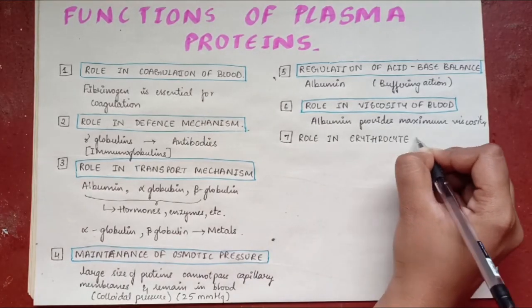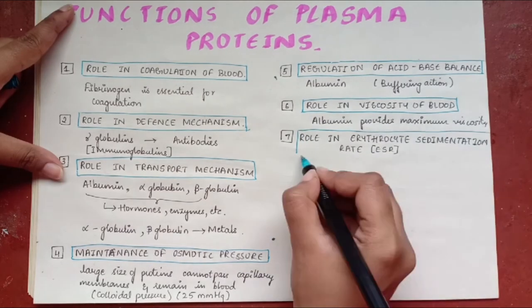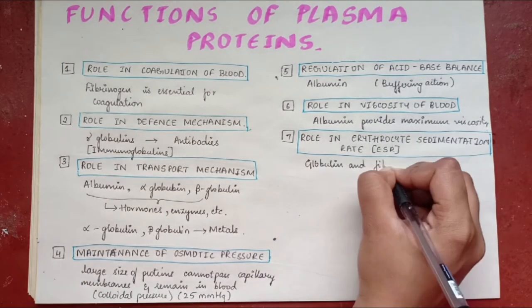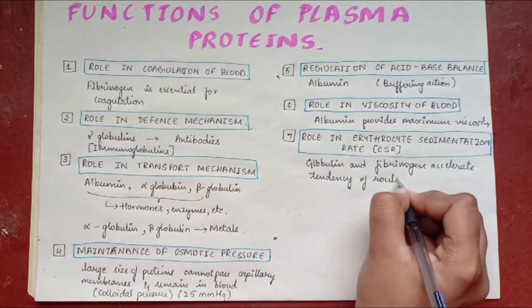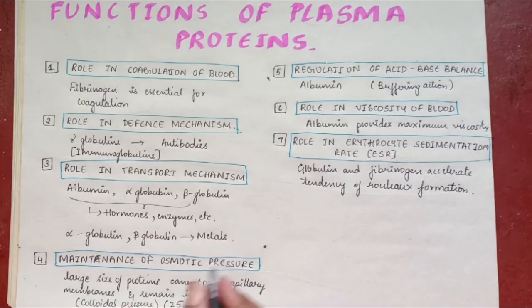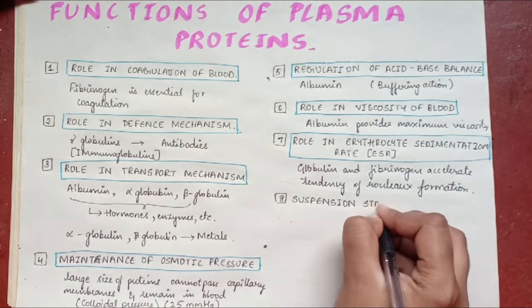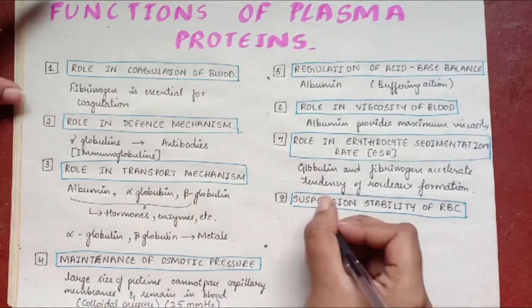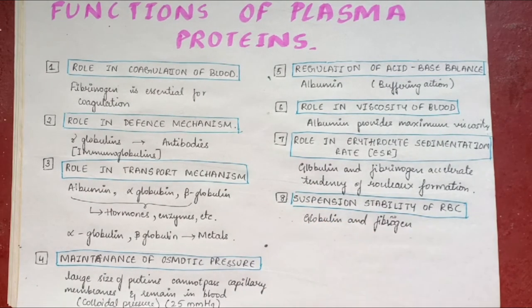Role in erythrocyte sedimentation rate. Globulin and fibrinogen accelerate the tendency of rouleaux formation by the red blood cells. Suspension stability of red blood cells. Globulin and fibrinogen help in suspension stability of red blood cells.